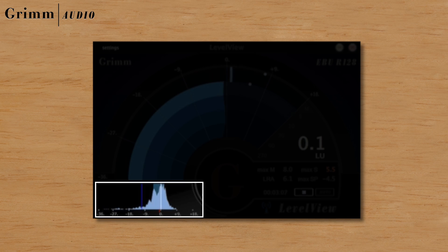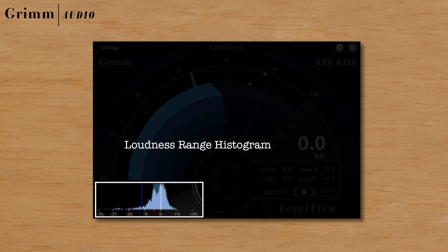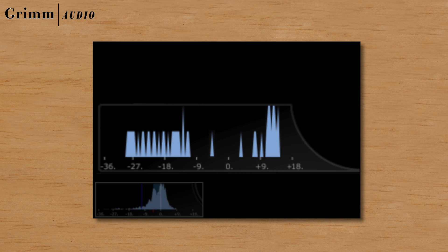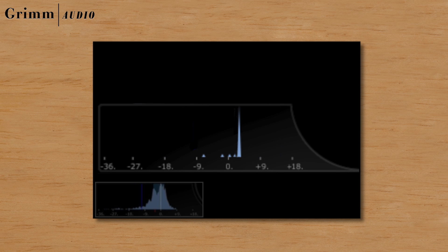On the left side, a histogram shows the distribution of the measured loudness. At a glance you can see whether the mix might be too dynamic or over-processed.